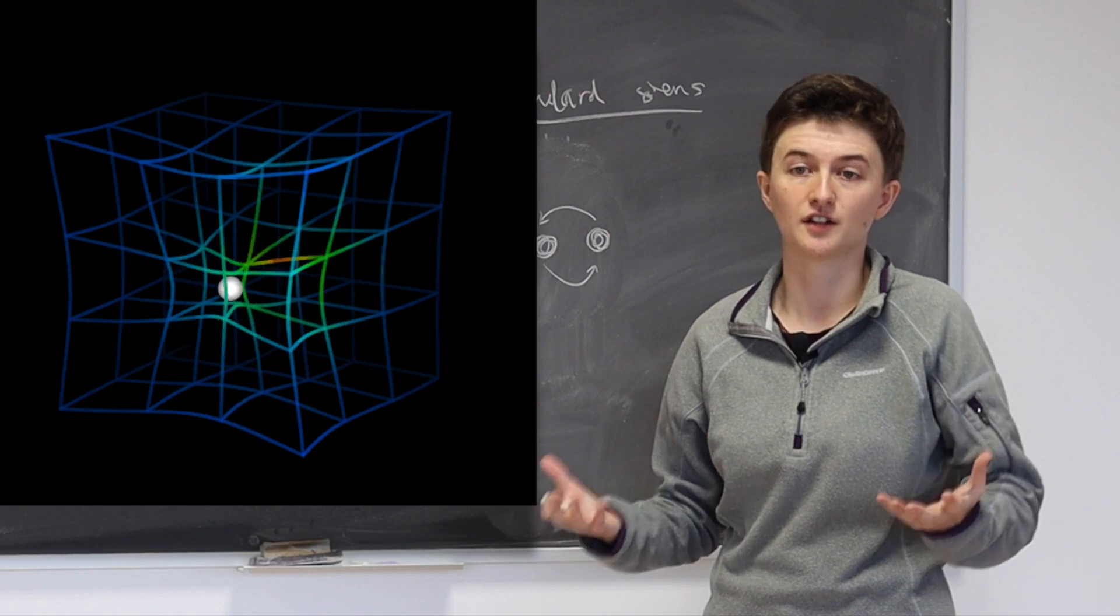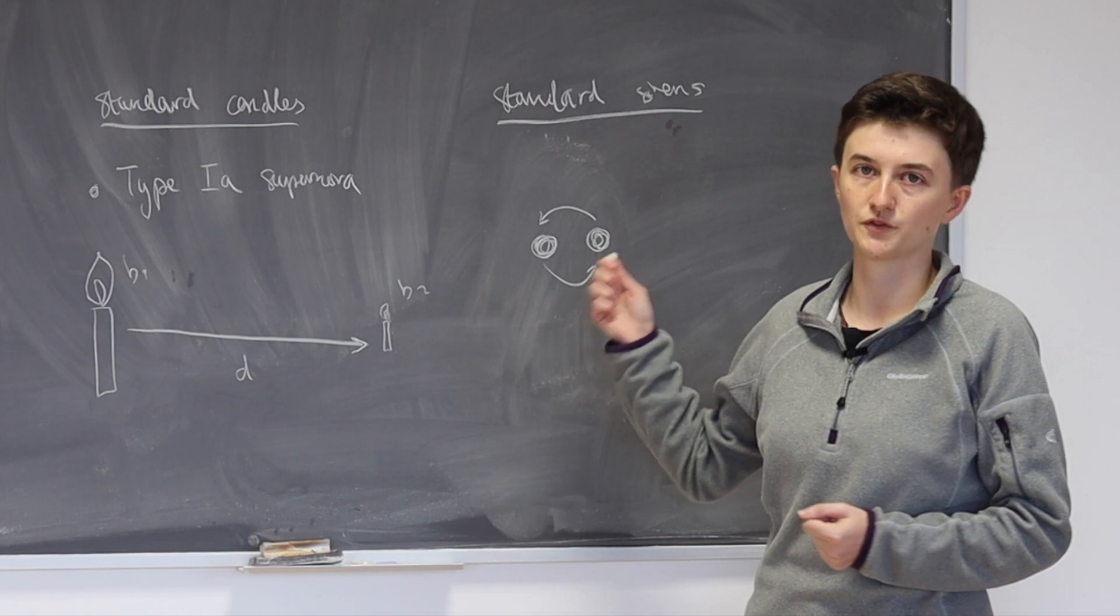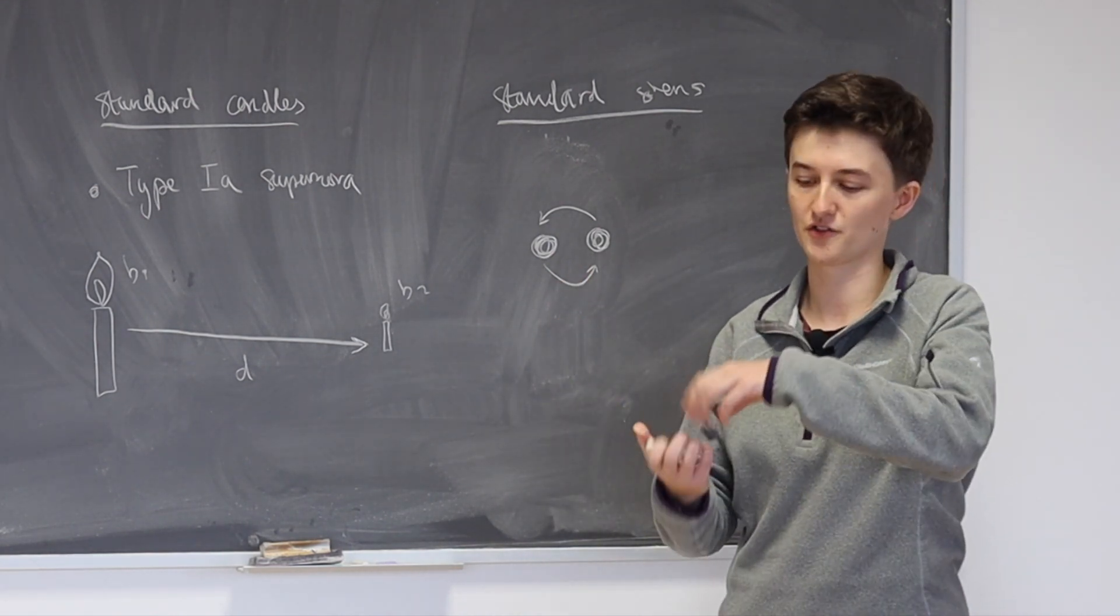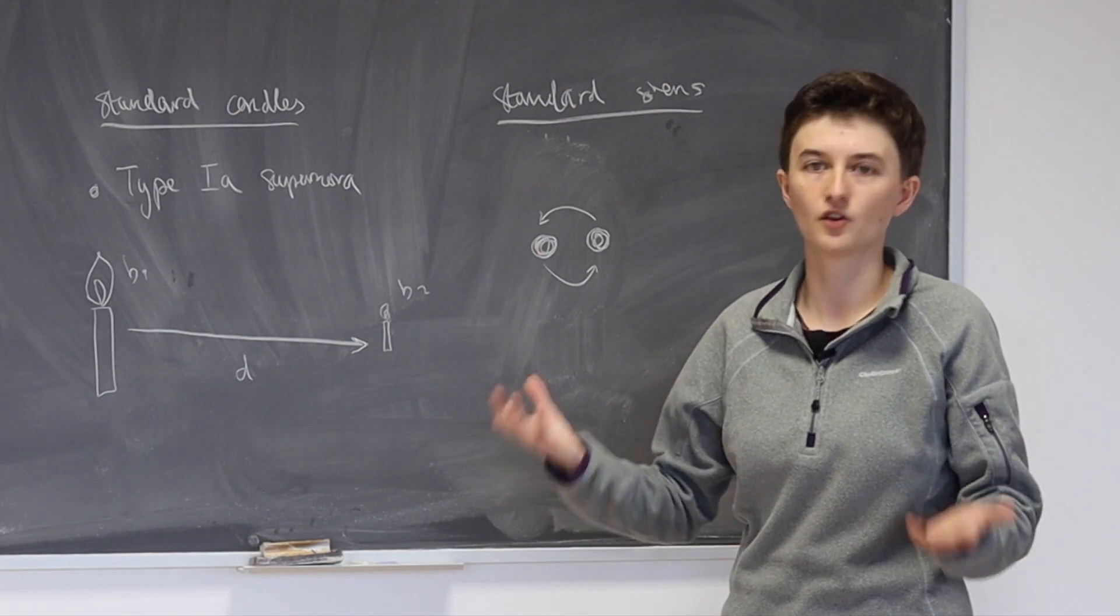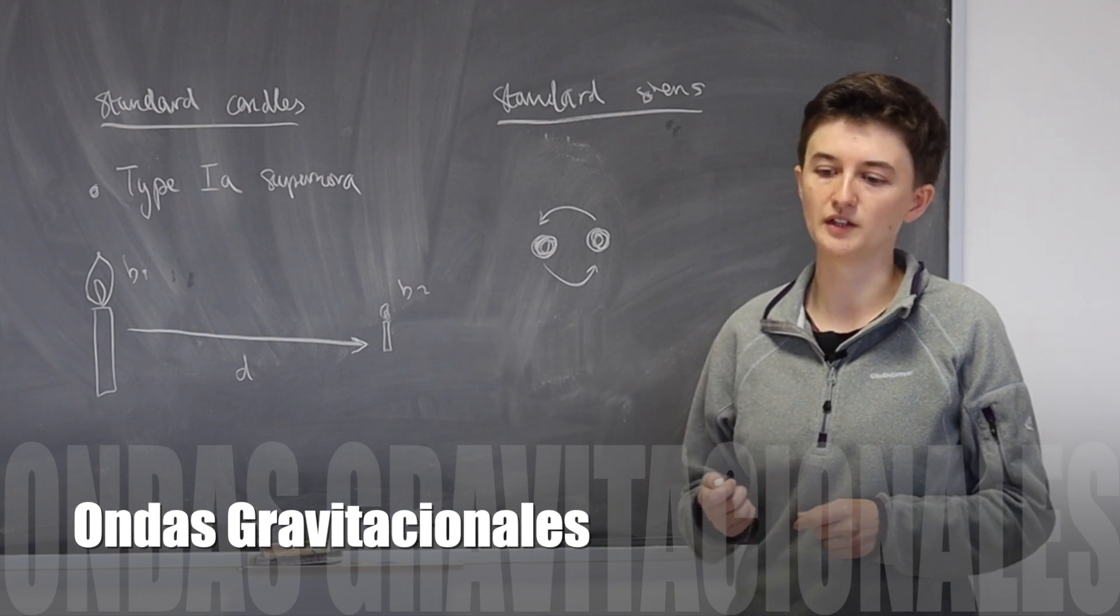And space-time isn't static, it's dynamical, it reacts to things, and in particular it reacts to masses. Now neutron stars are very dense objects, and so when you have two of them orbiting around each other and merging, this causes a lot of disturbance in space-time, and in particular the emission of gravitational waves.